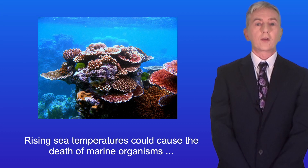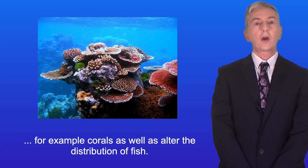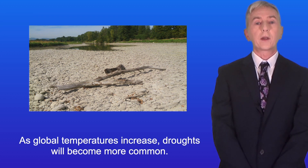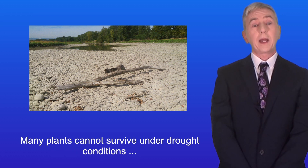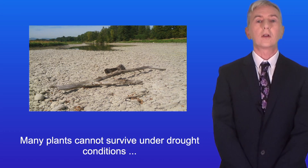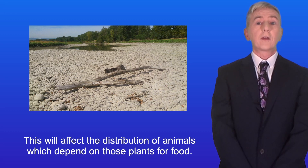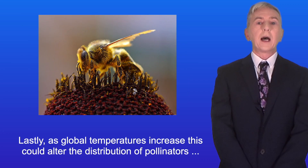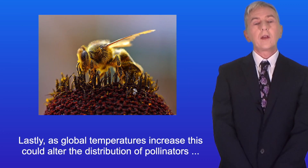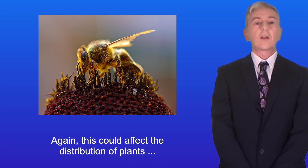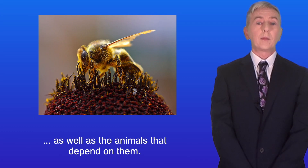Rising sea temperatures could cause the death of marine organisms, for example corals, as well as alter the distribution of fish. As global temperatures increase, droughts will become more common. Many plants cannot survive under drought conditions, so this could affect the distribution of plants in many habitats, and this will affect the distribution of animals which depend on those plants for food. Lastly, as global temperatures increase, this could alter the distribution of pollinators such as insects, and this could affect the distribution of plants as well as the animals that depend on them.